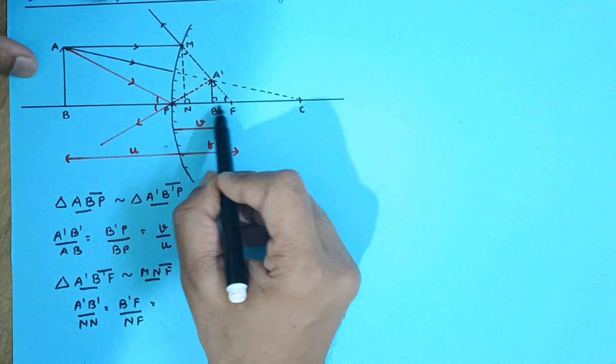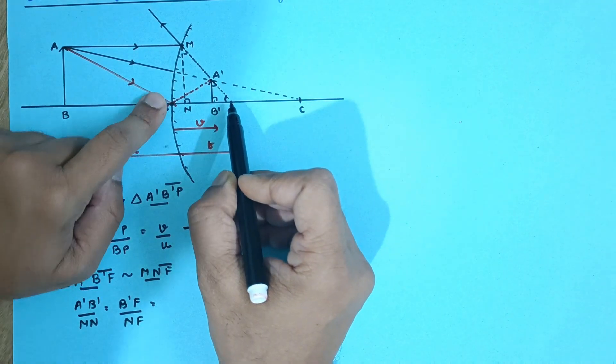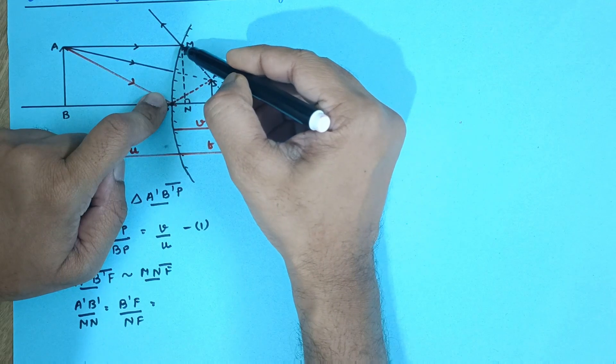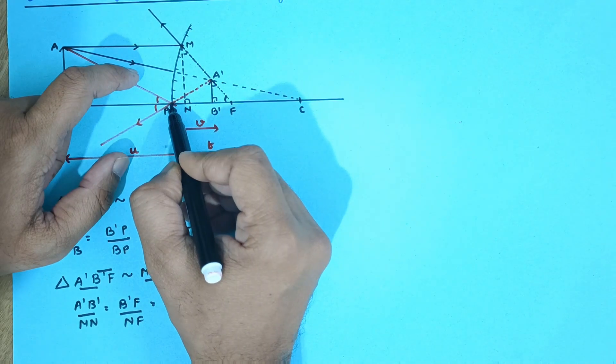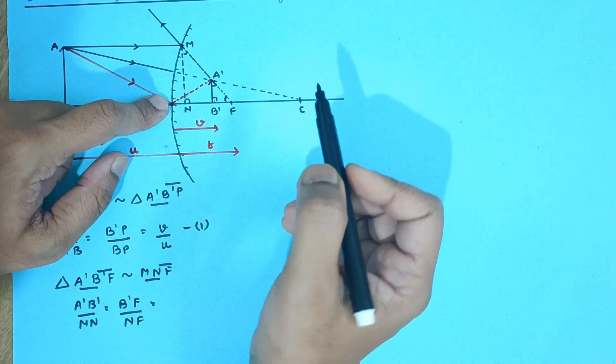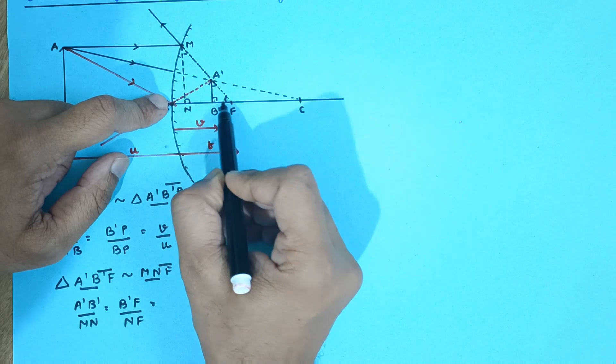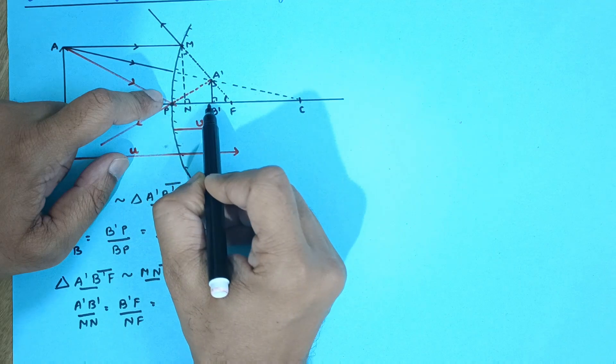So what is B'F? B'F is this whole distance. Now what I have done is I have dropped a perpendicular line. So this point N is very close to P. So I can consider PF and NF to be almost the same.